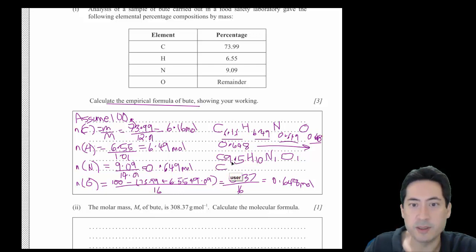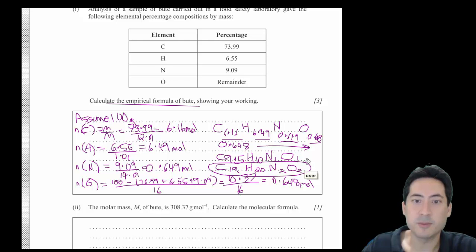The final answer is going to be C 9.5 times 2, so that's 18 plus 1, C 19, hydrogen 20, nitrogen 2, and oxygen 2. I wish that gave us a bit more space because you can't clearly set it out like that very easily. And that's your empirical formula.